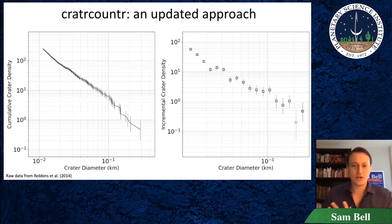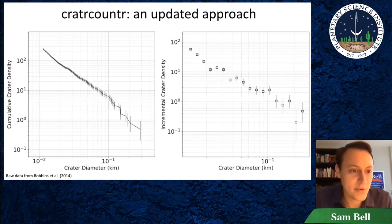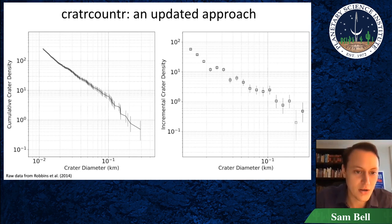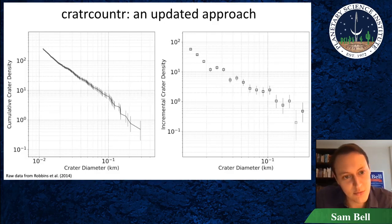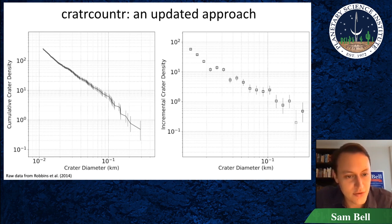Here's an example of what my package does. The first thing it does is reproduce all of the standard plots that we've all grown to love. Here's an example with an unbinned cumulative plot, using count data from the Robbins et al. 2014 paper on human error in crater counting. We see a very classic inflection point from the moon due to equilibrium saturation. Because the true error bars are plotted, we don't see even the first observation of N equals one going down to negative infinity — we see the true error.